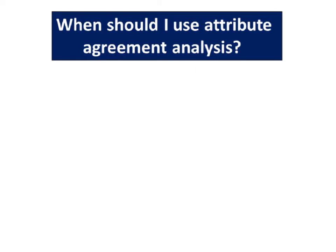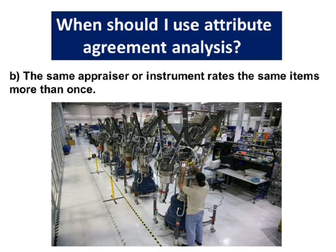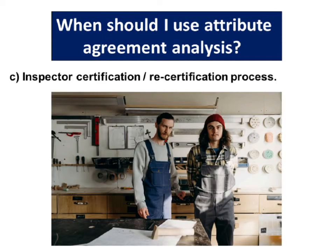When should I use attribute agreement analysis? Use it to assess the consistency or accuracy of attribute responses when two or more appraisers or instruments rate the same item. Do different appraisers rate the same items consistently? Second, when the same appraiser rates the same items more than once, you can assess the consistency of responses within each appraiser. Finally, attribute agreement analysis is useful for inspector certification and recertification processes.